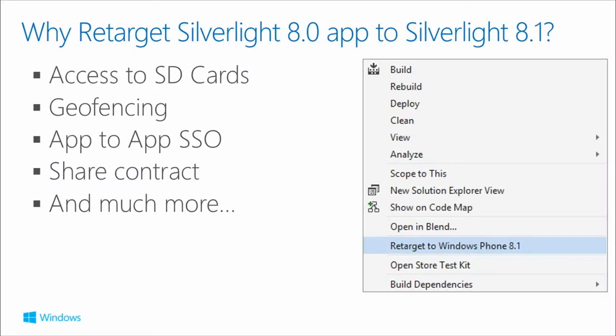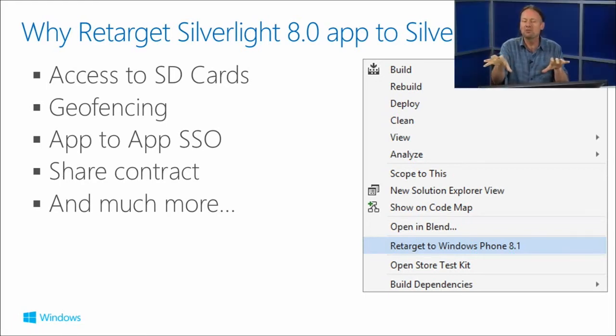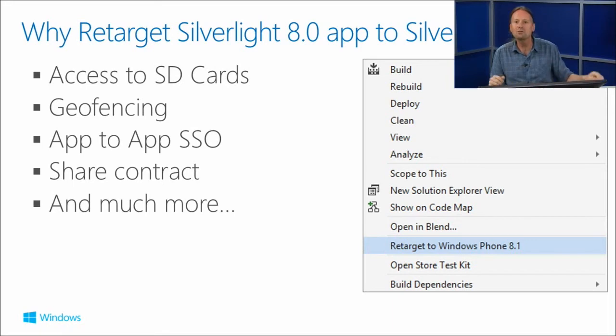If you're going to stay with Silverlight 8.0, apps built with that skill set will run great on Windows Phone 8.1 devices as well as Windows Phone 8 devices. When you retarget to Silverlight 8.1, that version will only run on 8.1 phones — but you can maintain two versions in the Store. In the 8.1 version you can take advantage of all the new APIs: SD card access, geofencing, single sign-on, the share contract, and loads more Windows Phone 8.1 WinRT APIs.